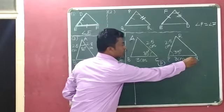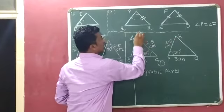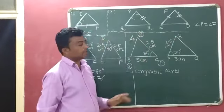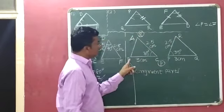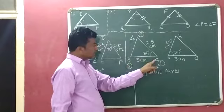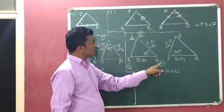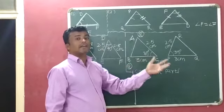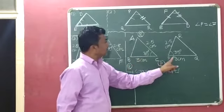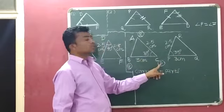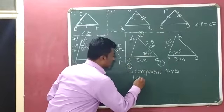P falls on C, Q falls on B, and R falls on A. Now we can write the congruent parts. First, CB corresponds to PQ — CB is equal to PQ and they have the same length of 3 cm. So CB = PQ = 3 cm.